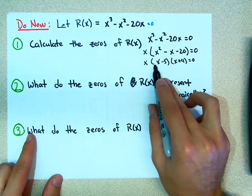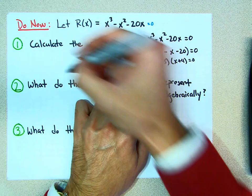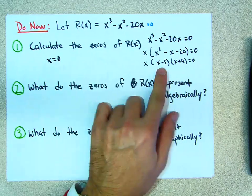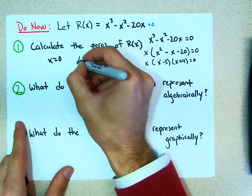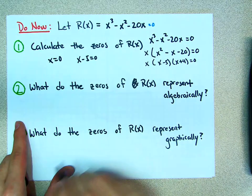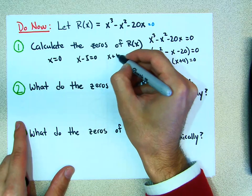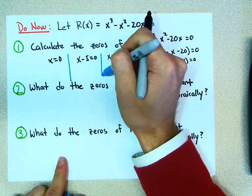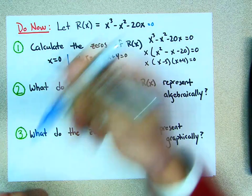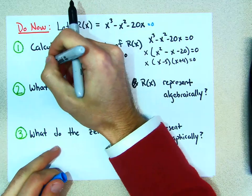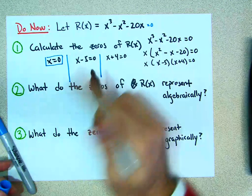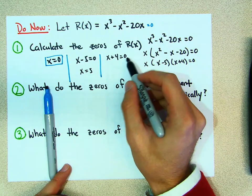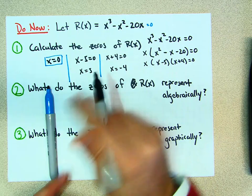And then what do we do? We set each factor equal to zero. This x equals zero. This x minus 5 equals zero, and this x plus 4 equals zero — we have to do all three of them. So x equals zero, that's one. Then plus 5 on both sides: x equals 5. Then minus 4: x equals negative 4.